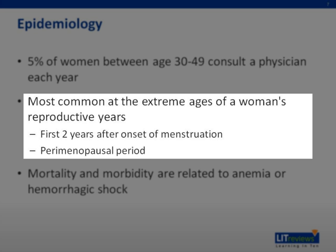DUB affects up to 50% of perimenopausal women. In the perimenopausal period, DUB may be an early manifestation of ovarian failure, causing decreased hormone levels or responsiveness to hormones, thus also leading to anovulatory cycles. In patients who are 40 years or older, the number and quality of ovarian follicles diminishes. Follicles continue to develop but do not produce enough estrogen in response to FSH to trigger ovulation. The estrogen that is produced usually results in late cycle estrogen breakthrough bleeding.